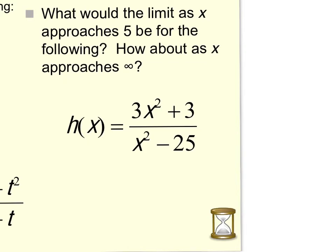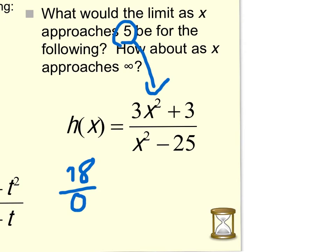Let's look at this next problem, which has two questions. First, what is the limit as x approaches 5? Using substitution, I get 3 times 5 squared plus 3 in the numerator, which is 78, divided by 5 squared minus 25, which is 0. This is a different situation from 0 over 0 — here it's 78 divided by 0. A non-zero number divided by 0 always means there is no answer, which we write as DNE, does not exist.